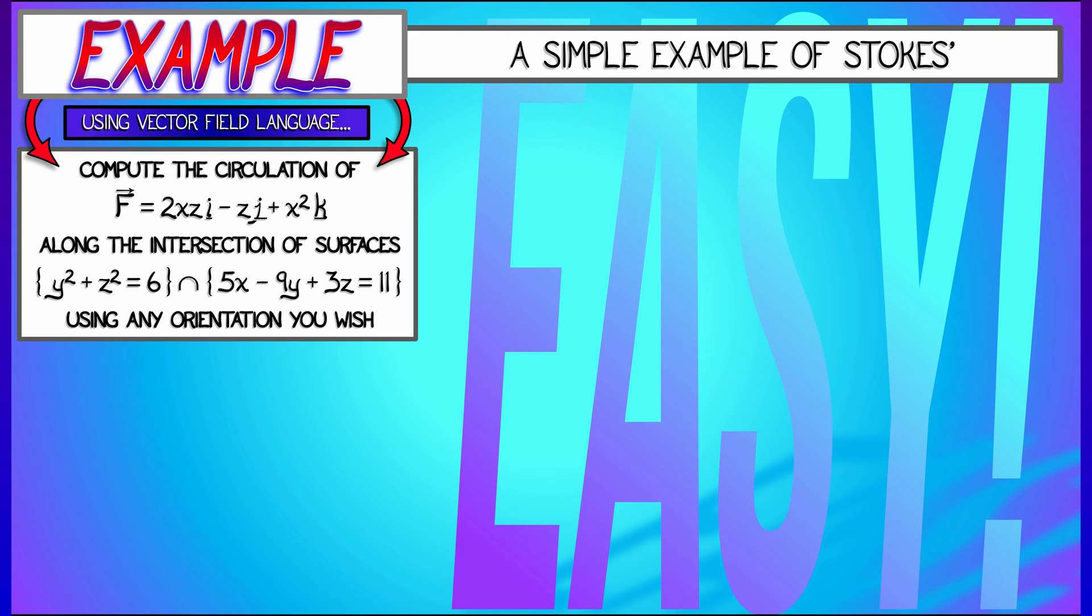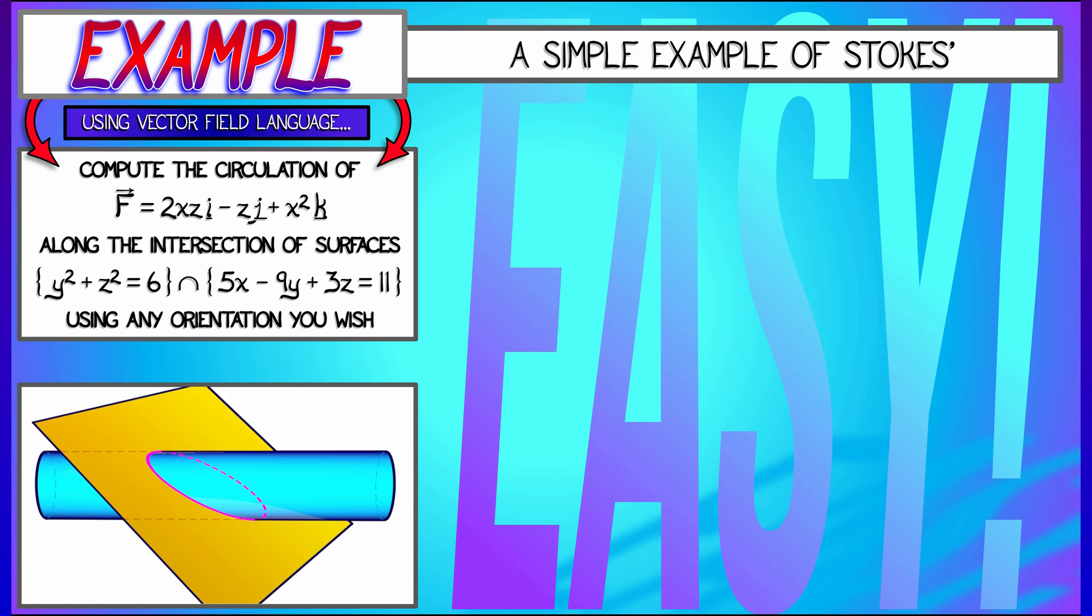Now let's not worry about orientation, we'll deal with that later. Let's worry about these two surfaces. The first one, y squared plus z squared equals 6, that's a cylinder that opens up along the x-axis. The second surface is clearly the equation of a plane that cuts along some skew direction.